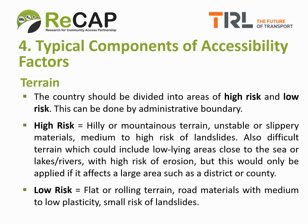A country should also be divided into areas that indicate the risk to road deterioration as a result of terrain. It's recommended that countries are divided into zones of high and low risk, and this can be done on the basis of administrative boundaries. Although digital terrain models are freely available for the entire world, a simple classification of districts as high or low terrain risk is sufficient to help define accessibility factors. Areas of high risk would typically include hilly or mountainous terrain with unstable or slippery materials and medium to high risk of landslides, or difficult terrain such as low-lying areas close to the sea, lakes, or rivers with a high risk of flooding and erosion — but only if it affects a large area such as a district or county. Low risk terrain includes flat or rolling terrain not affected by floods with a small risk of landslides and road materials with medium to low plasticity.